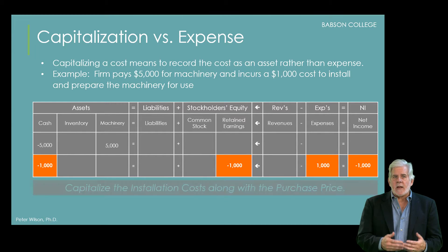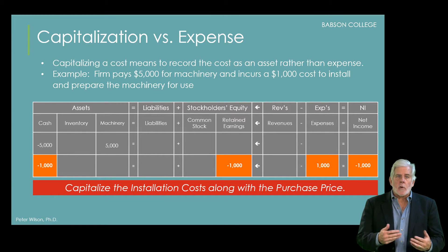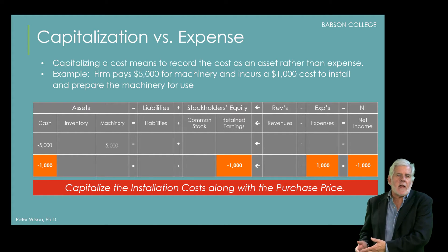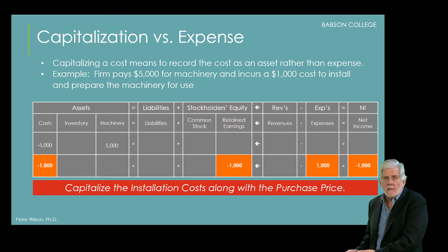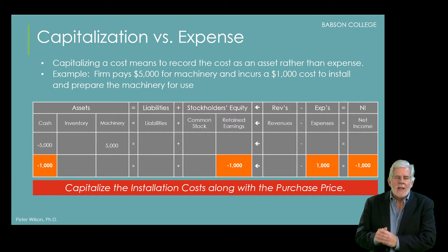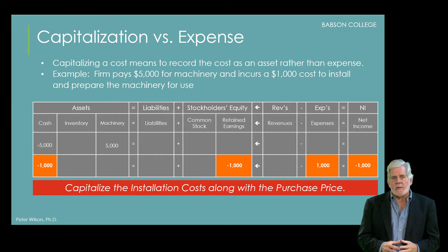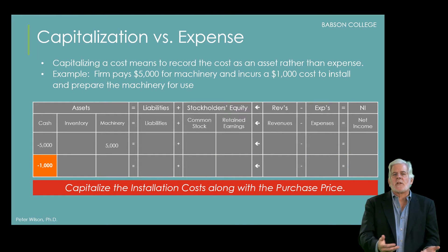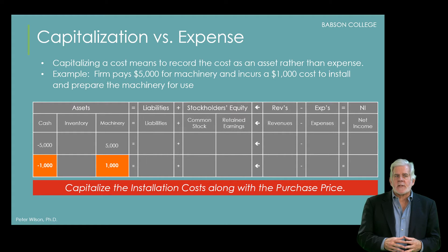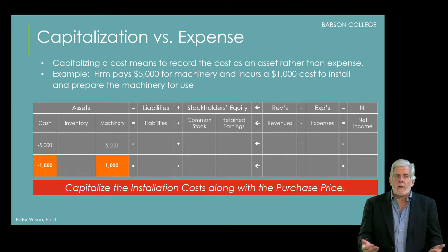Under that logic, the accounting rules require that the installation costs also be capitalized, which means that rather than showing the $1,000 as an expense that immediately reduces net income and retained earnings, instead capitalize the $1,000 by adding it to the machinery account. The result is the machinery is recorded at a total cost of $6,000, which is the amount that will be depreciated in future periods.